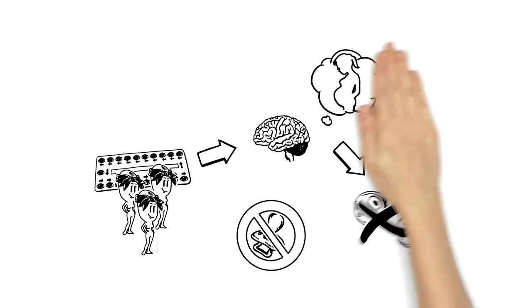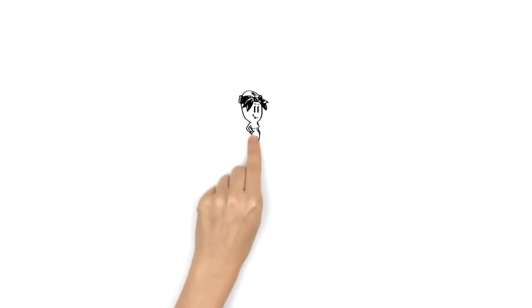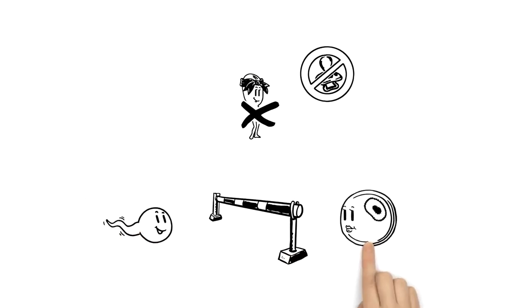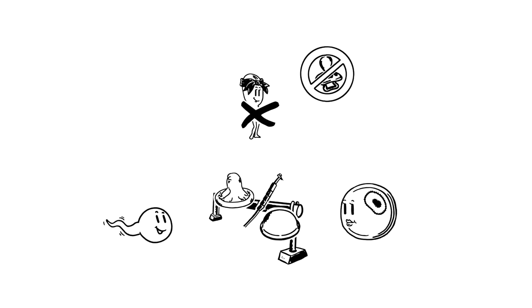But there are also contraceptives that work without hormones. They prevent a pregnancy by stopping the sperm on its way to the egg cell. Condoms, copper coils and the diaphragm work in this way.